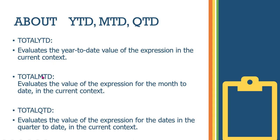We will cover YTD, MTD, and QTD — meaning Year to Date, Month to Date, and Quarter to Date. YTD evaluates the year-to-date value of an expression in the current context — it gives cumulative sales and cumulative values. Similarly, MTD and QTD work in the same way for month and quarter respectively.